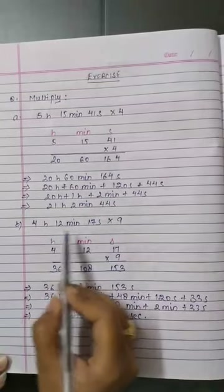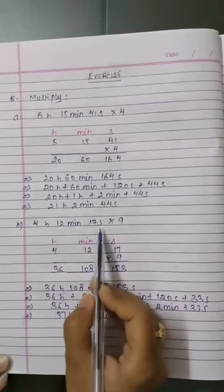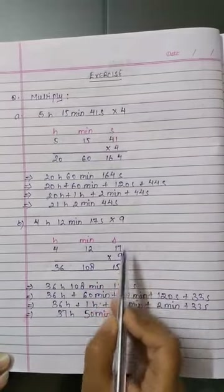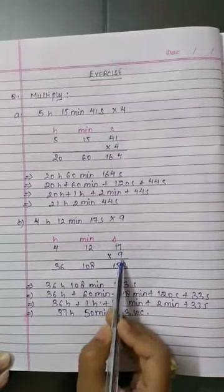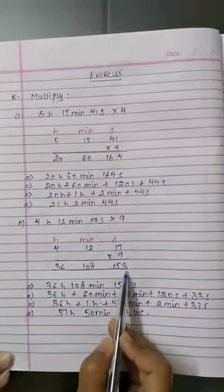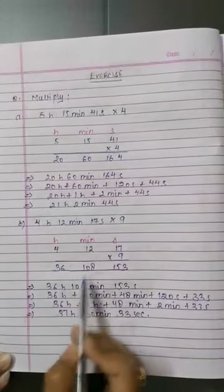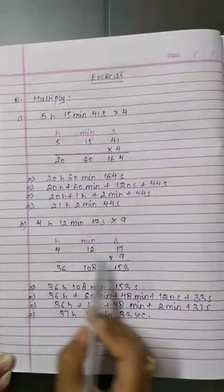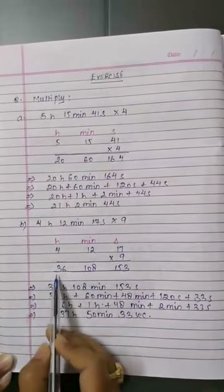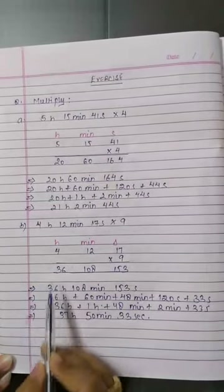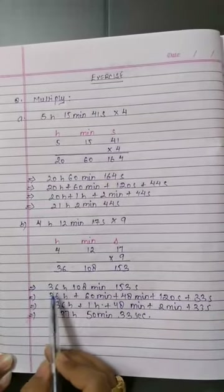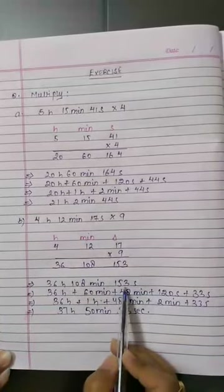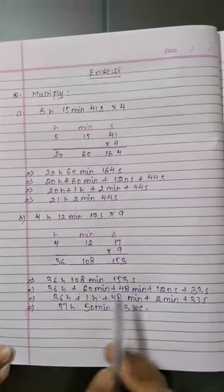Part B: 4 hours 12 minutes 17 seconds multiplied by 9. Here 17 into 9 is 153 seconds, 12 into 9 is 108 minutes, and 4 into 9 is 36 hours. So the product is 36 hours, 108 minutes, 153 seconds.